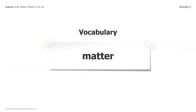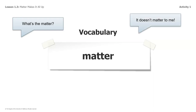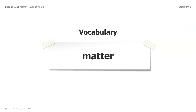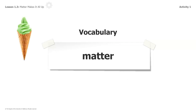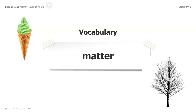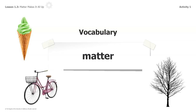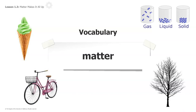Let's take a look at this word: matter. We've said it a lot and read it a lot. There are many different ways to use the word matter besides how we've been using it in science. We say things like, what's the matter? It doesn't matter to me. No matter what, I am still your friend. But when we look at the word matter in science, matter means the stuff that things are made of. Ice cream cones are made of matter. The trees outside are made of matter. Our toys, bicycles, and clothes are made of matter. Everything that has a liquid, solid, or gas form — all those things are made of matter.